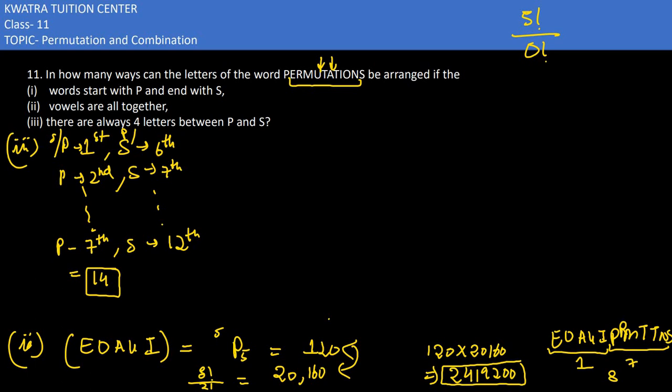We know from the first case that 10 factorial over 2 factorial, because 2 letters repeat, which was 18,14,400.